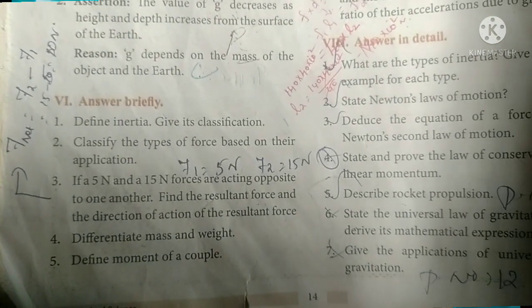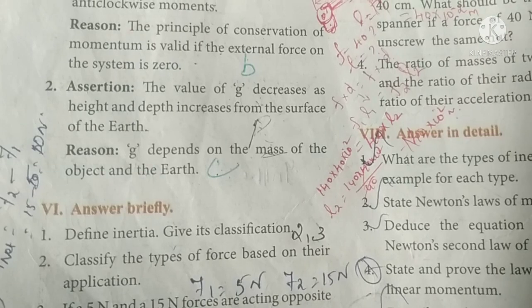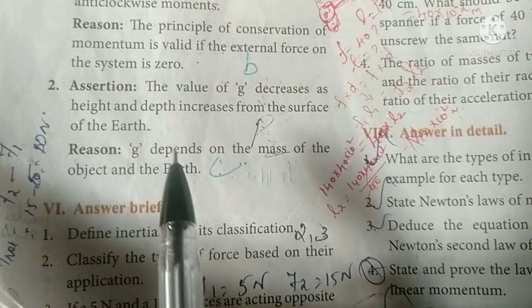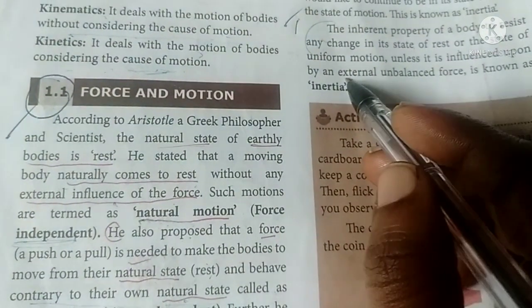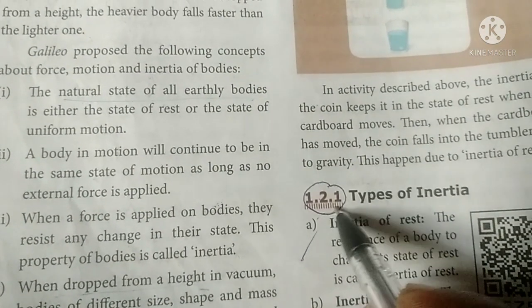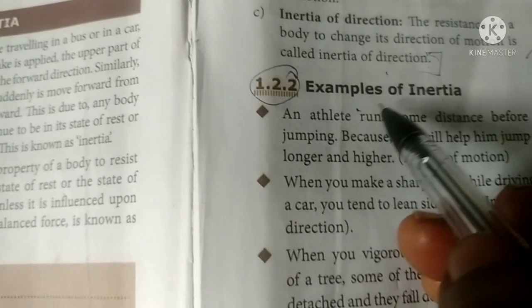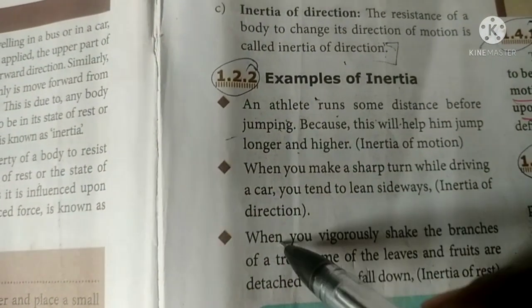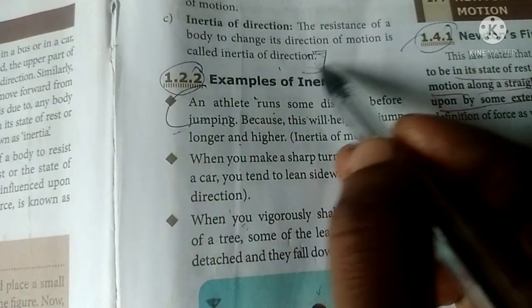Roman numeral six — short answer questions. Question one: define inertia and give its classification. Refer to page numbers 2 and 3. Write the definition — inertia is the inherent property of a body. Then write the types: inertia of rest, inertia of motion, and inertia of direction — with explanation and at least one example for each.